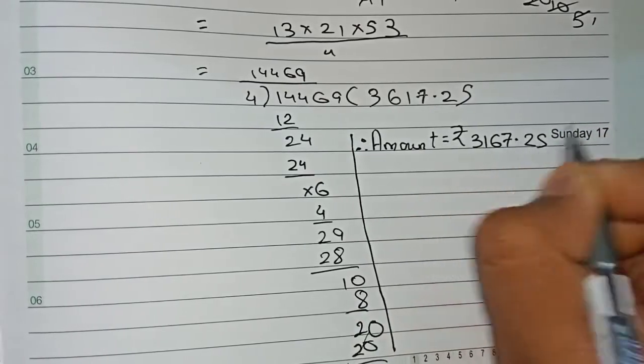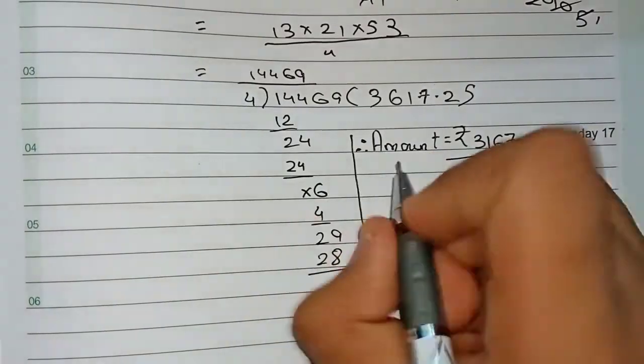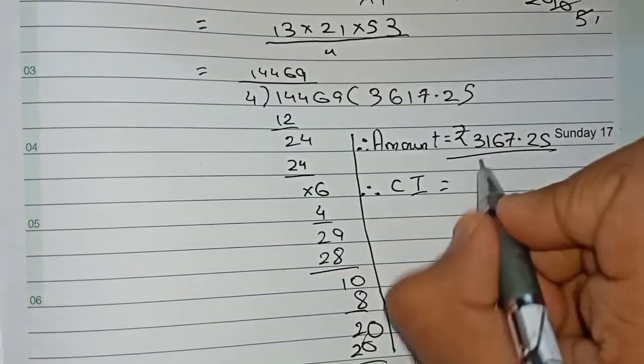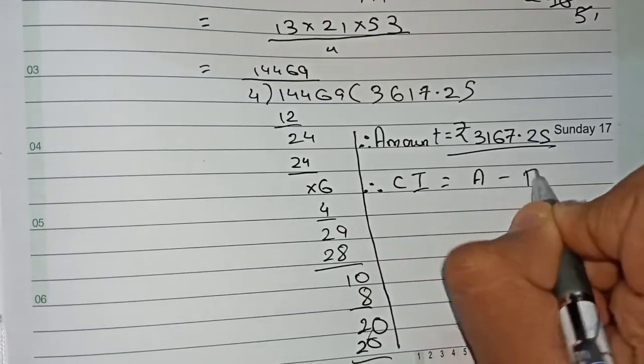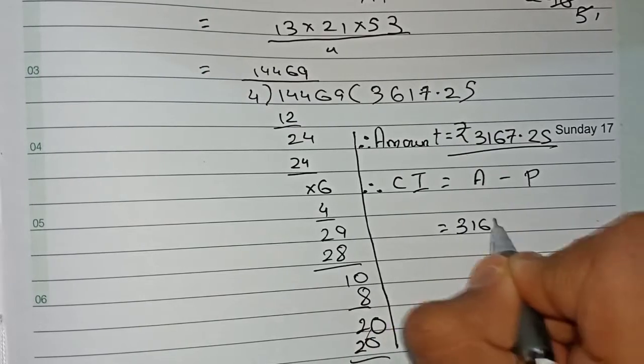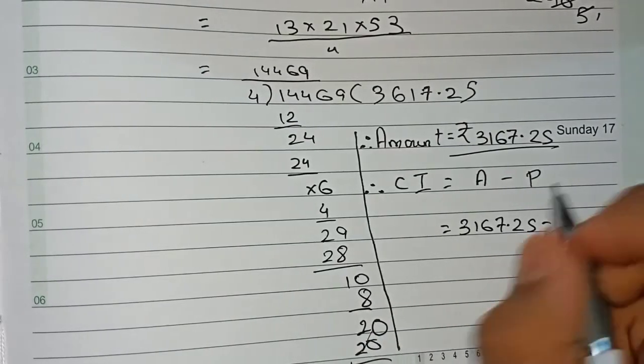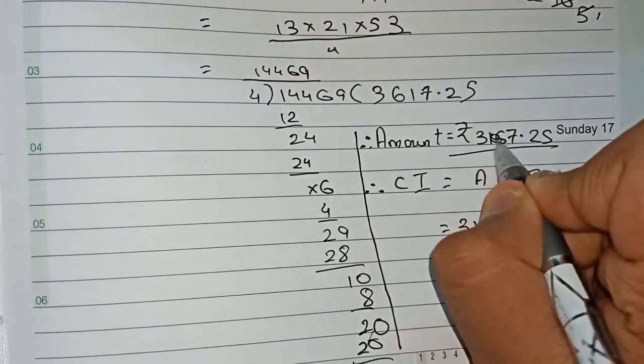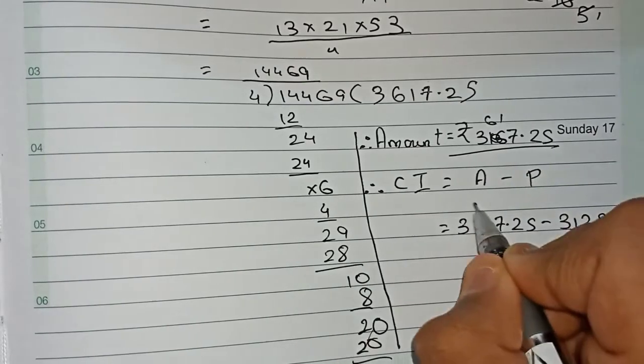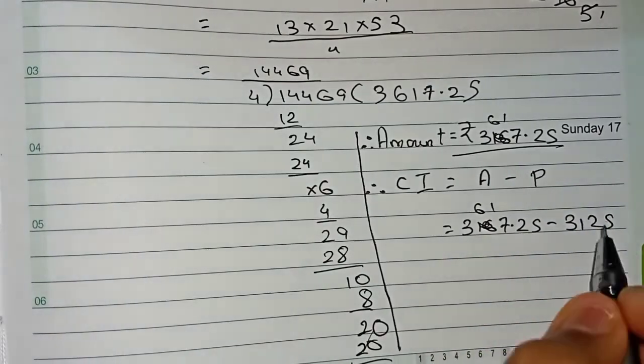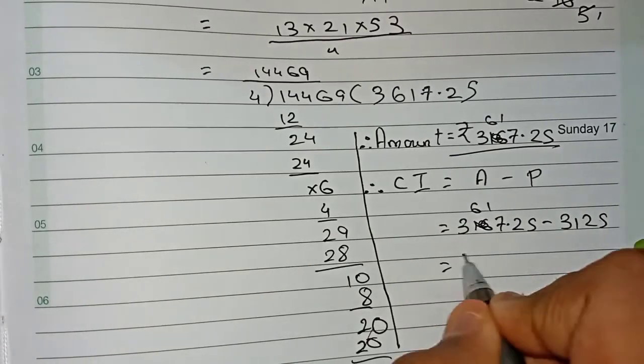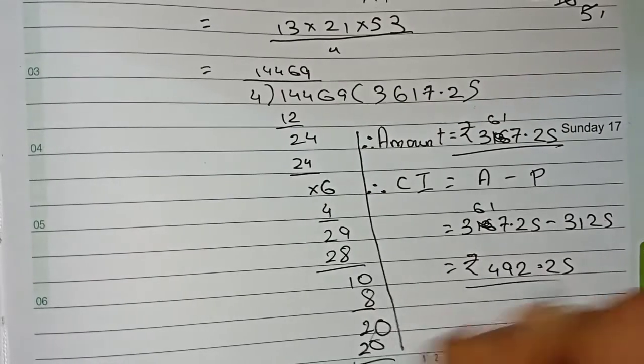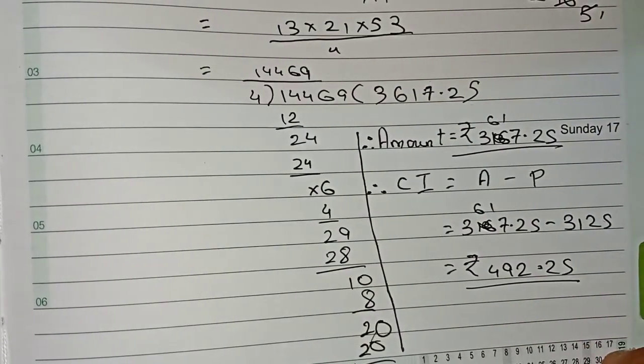Therefore, amount equals rupees 3617.25. Now our final task is to find out the compound interest. Compound interest is equal to amount minus principal. The amount is 3617.25 and our principal is 3125. Sorry guys, I made a mistake, it will be 3617 and here also 3617.25 minus 3125, and that equals rupees 492.25. Therefore, our compound interest is 492.25 rupees.